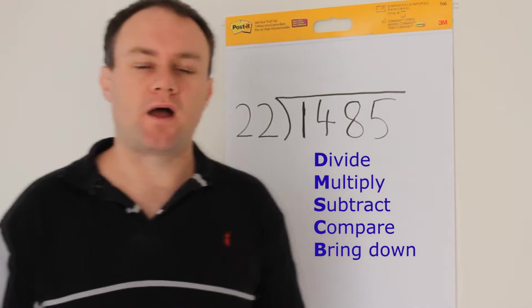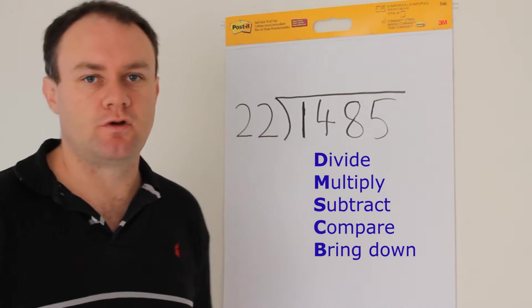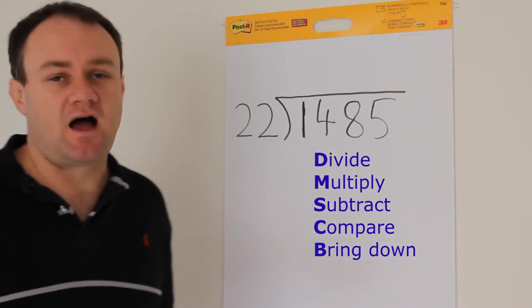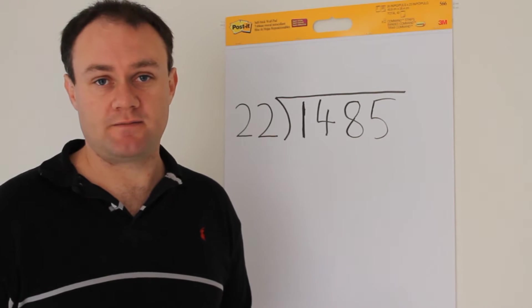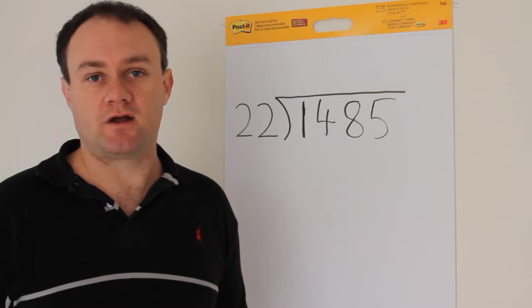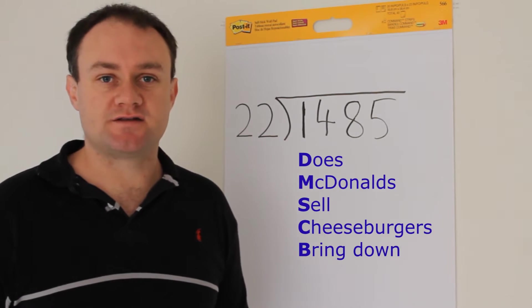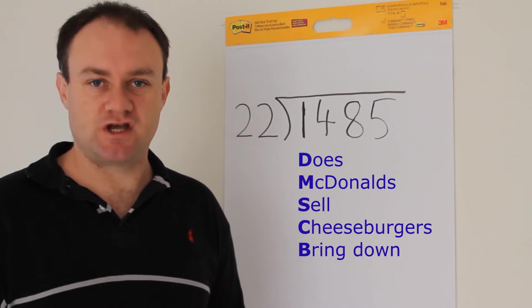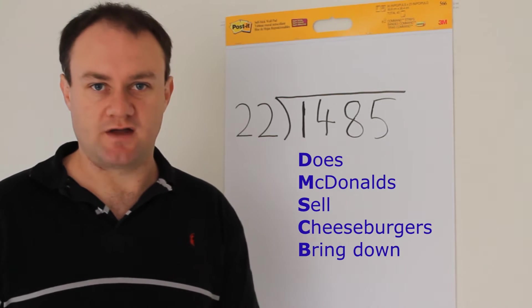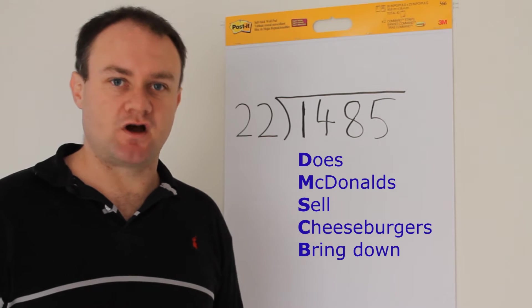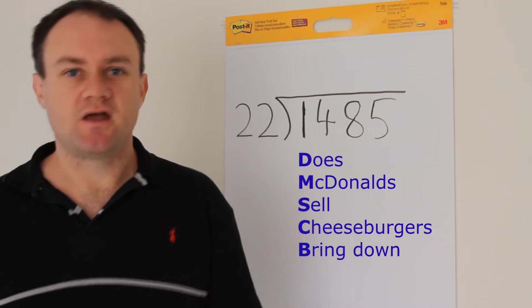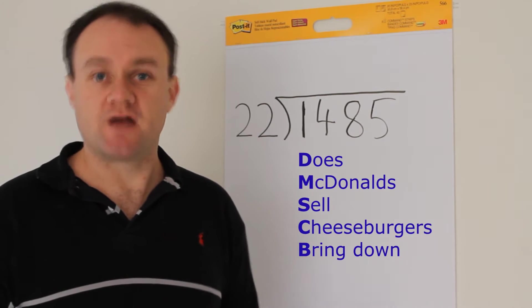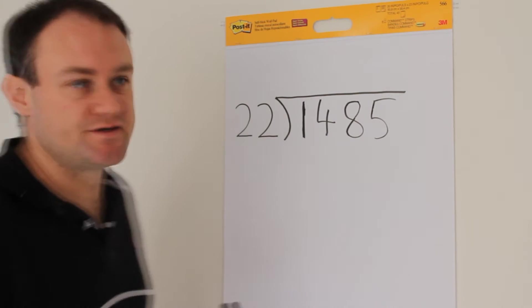Now there are lots of different ways that students can be taught to memorize this process. One that I particularly like is that you take the first letter of each one and form a little mnemonic, and the mnemonic is: Does McDonald's Sell Cheeseburgers? And then you bring down. So if you go through that process each time, Does McDonald's Sell Cheeseburgers and bring down, it's a nice easy way to remember it.